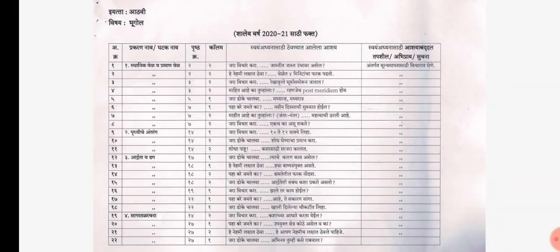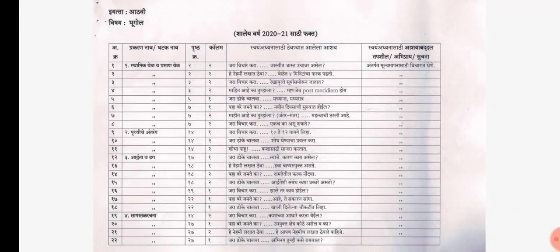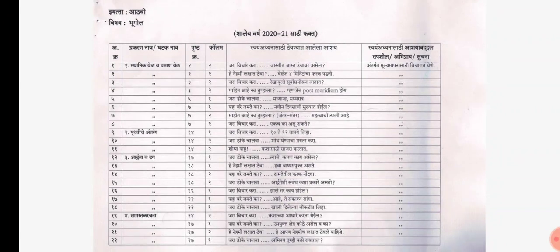In chapter number 1, on page number 2, in the second column, both the activities are cancelled. In page number 3, second column, both activities are cancelled. Page number 5, first column activity is cancelled. Page number 7, column number 1 and 2, all their activities are cancelled.